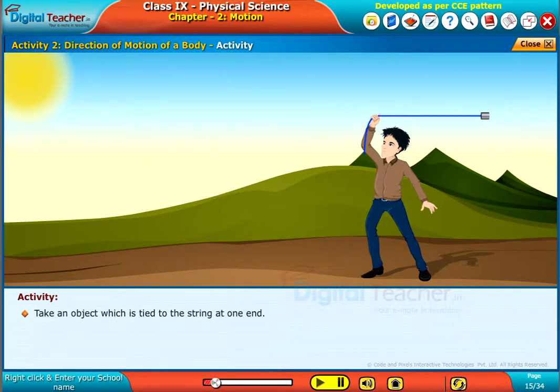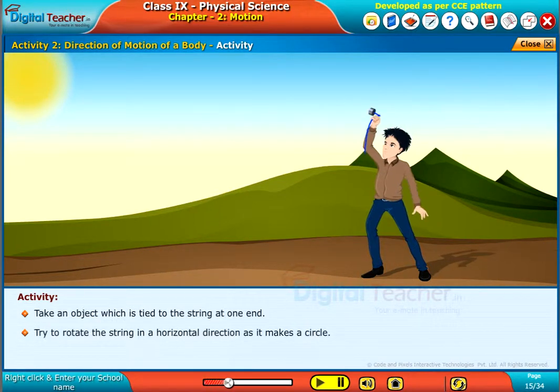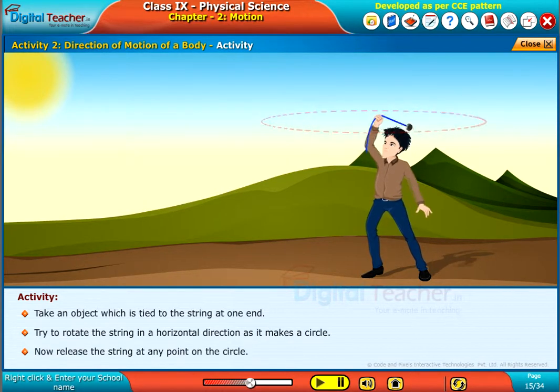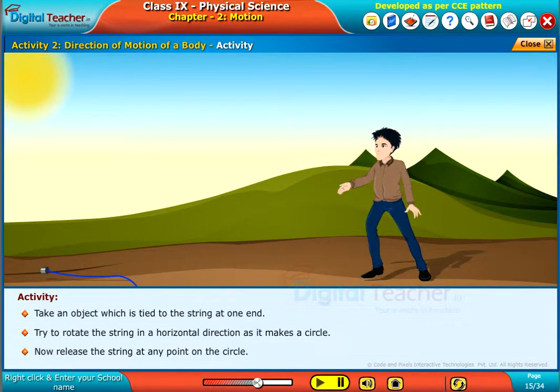Take an object which is tied to the string at one end. Try to rotate the string in a horizontal direction as it makes a circle. Now release the string at any point on the circle.